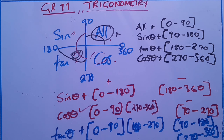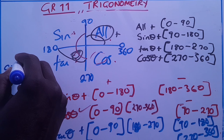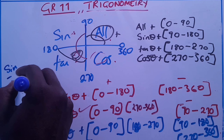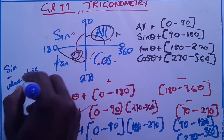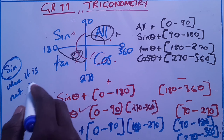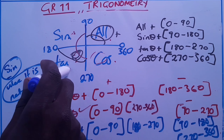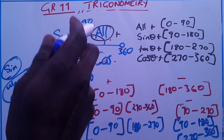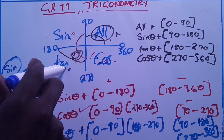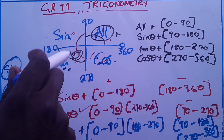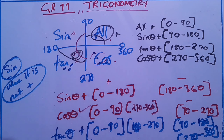Other conclusions we can draw: sine is negative everywhere it is not positive — positive in the first and second quadrants, so negative in the third and fourth. Cos is positive in the first and fourth, so negative in the second and third. Tangent is positive in the first and third, so negative in the second and fourth.